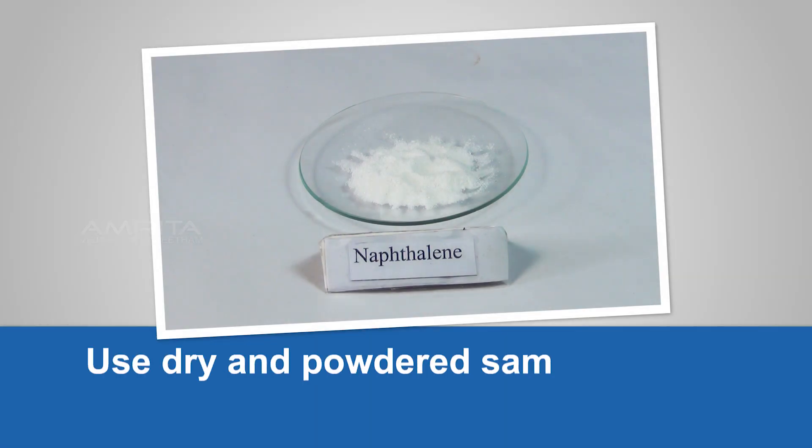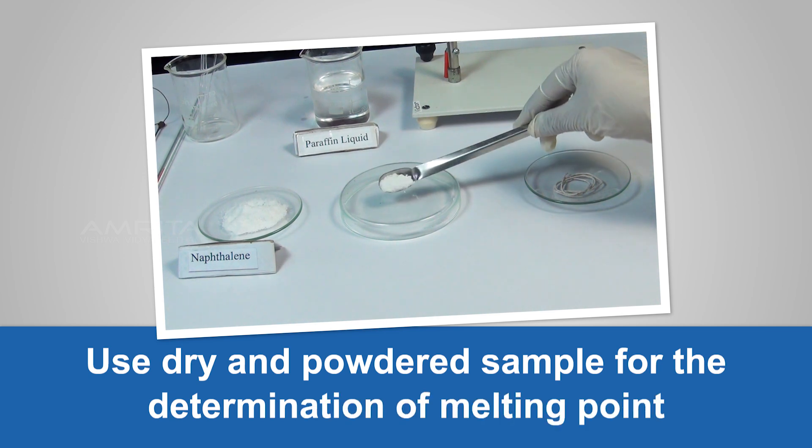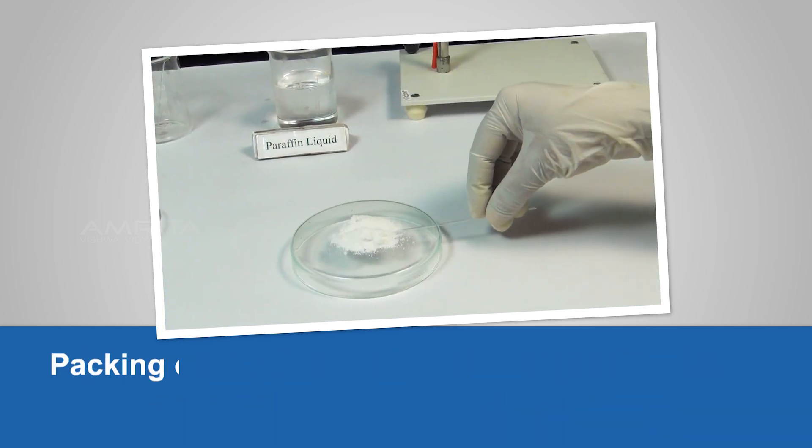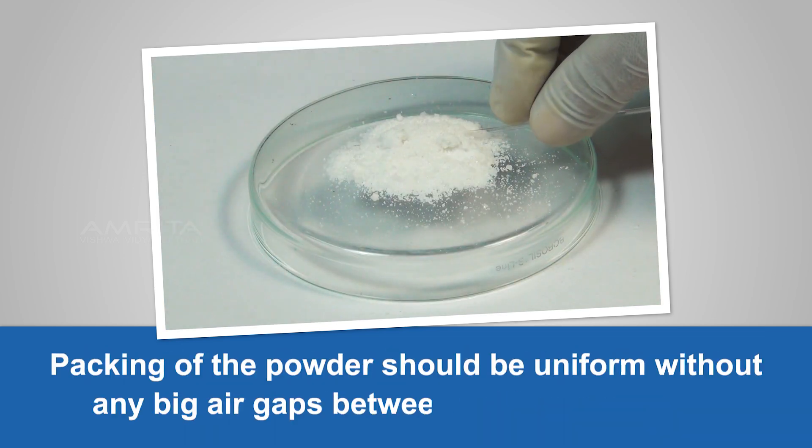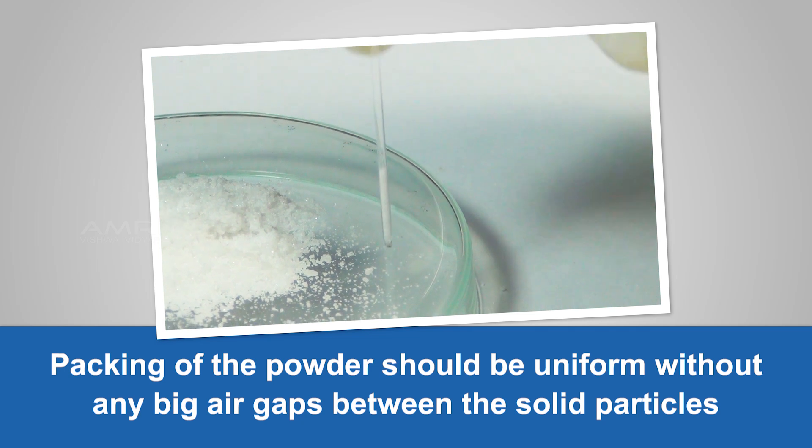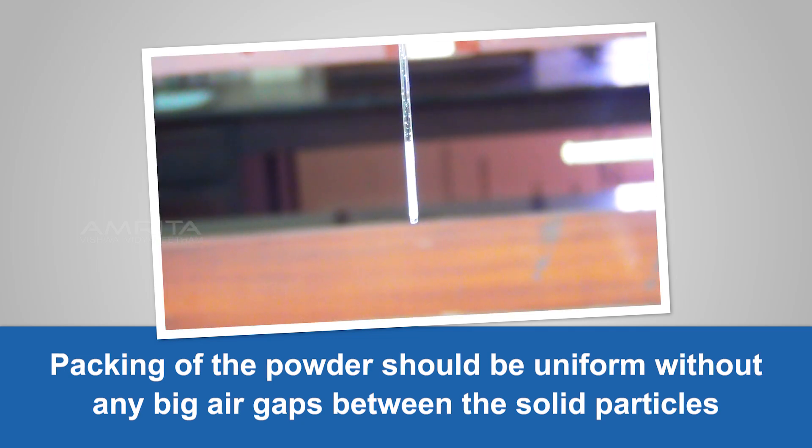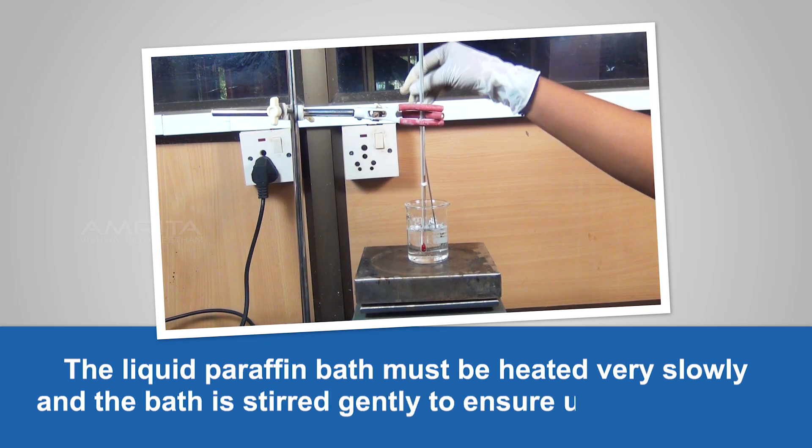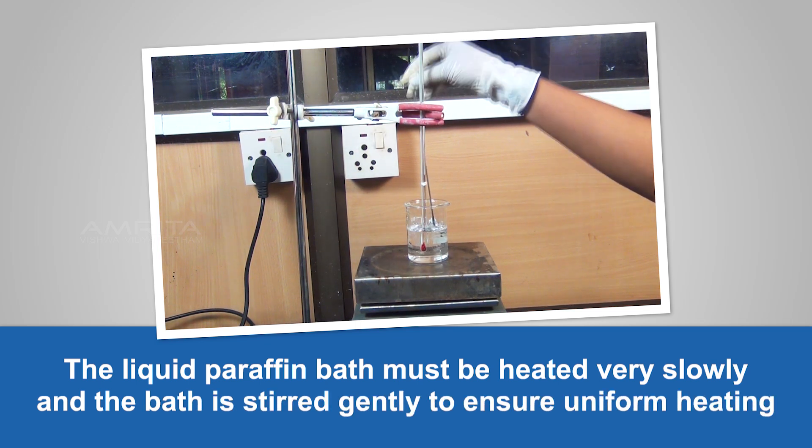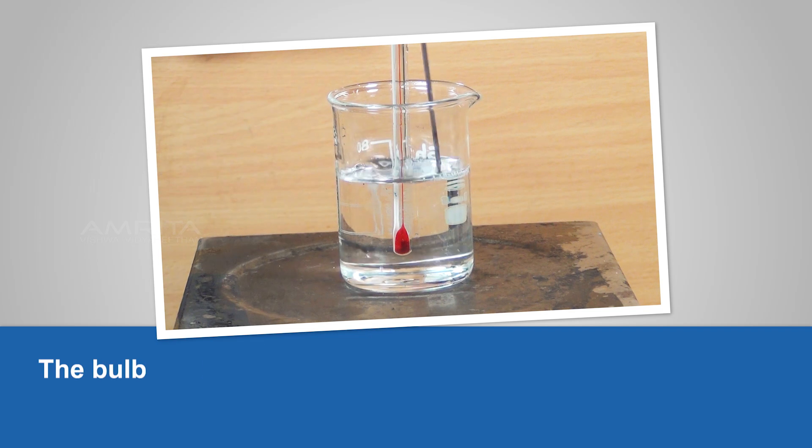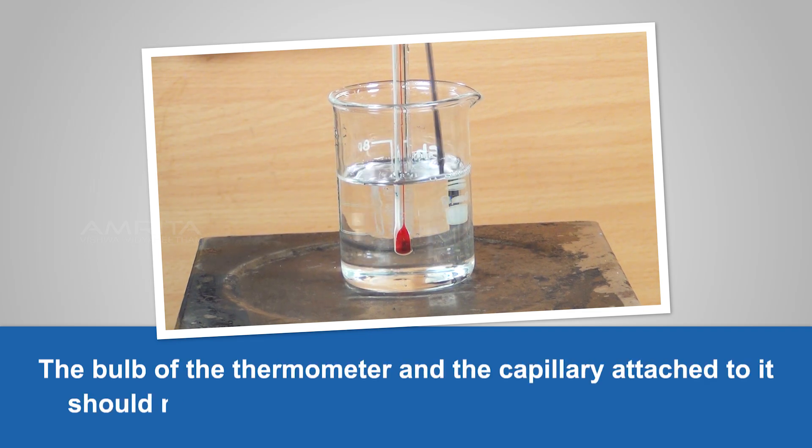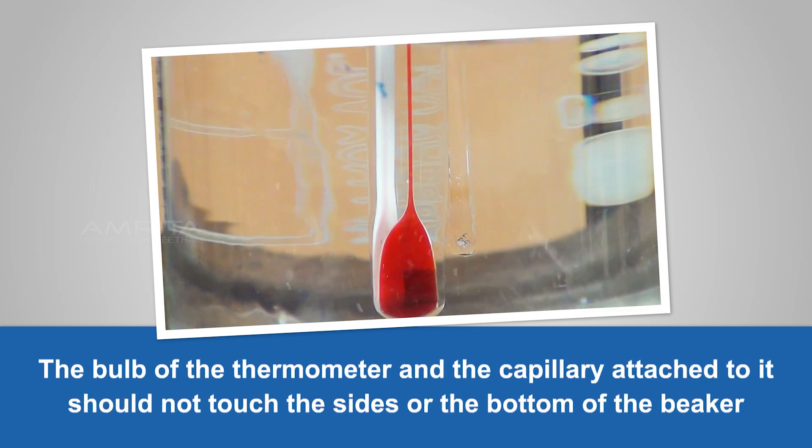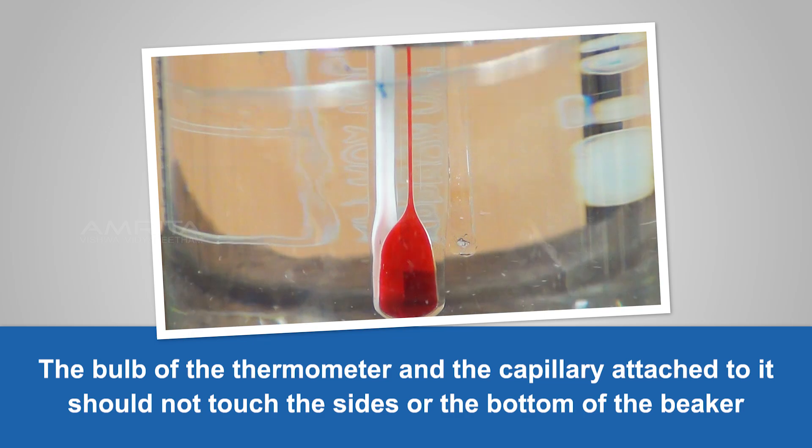Precautions: Use dry and powdered sample for the determination of melting point. Packing of the powder should be uniform without any big air gaps between the solid particles. The liquid paraffin bath must be heated very slowly and the bath is stirred gently to ensure uniform heating. The bulb of the thermometer and the capillary attached to it should not touch the sides or the bottom of the beaker.